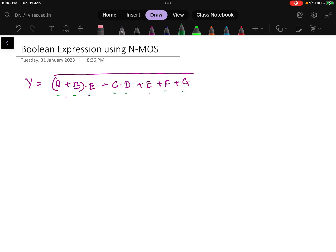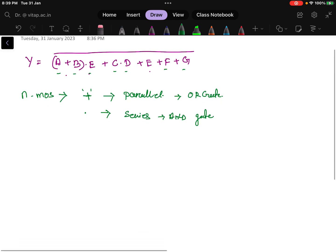Now we have to implement this using NMOS. While implementing using NMOS, one thing we need to keep in mind: if there is a plus symbol in the expression, that is represented as a parallel line. If there is a dot symbol or multiplication, that is represented with series connection. This is an AND gate, and parallel is an OR gate.